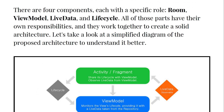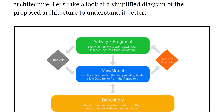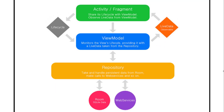Let's look at a simplified diagram of the proposed architecture. We have the Activity at the top, which shares its lifecycle with the ViewModel and observes LiveData from the ViewModel. The ViewModel monitors the view's lifecycle, providing it with LiveData taken from the Repository. The ViewModel takes data from the Repository and passes it to LiveData, which is observable.